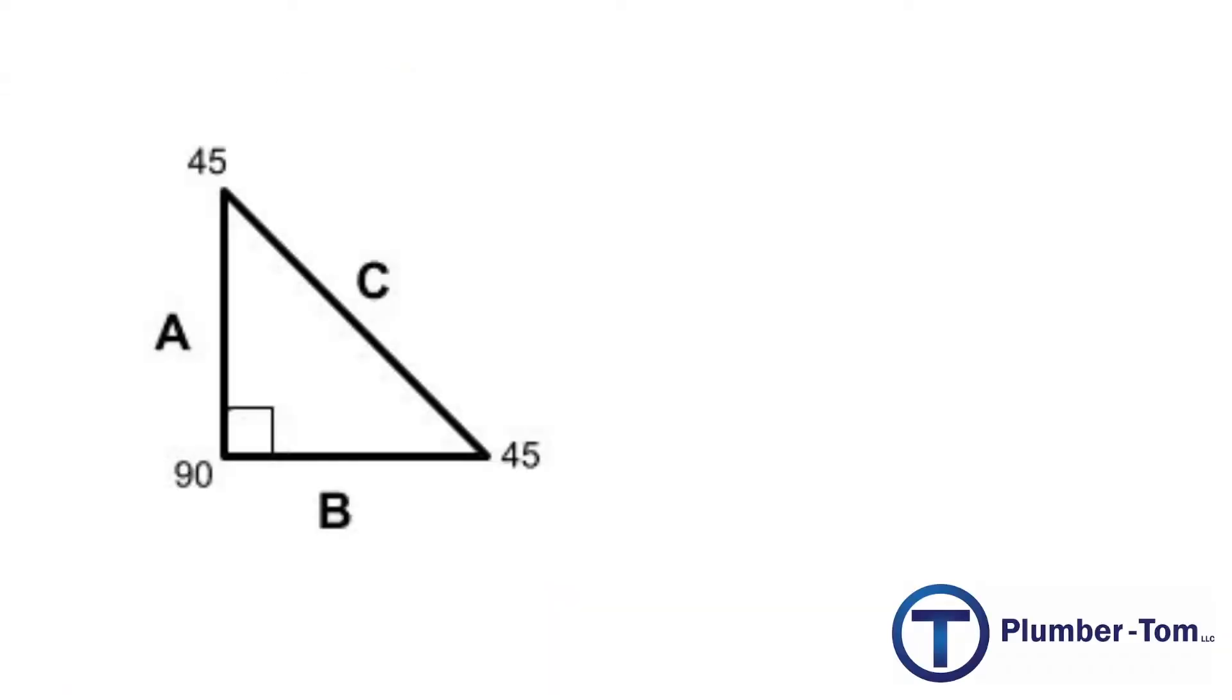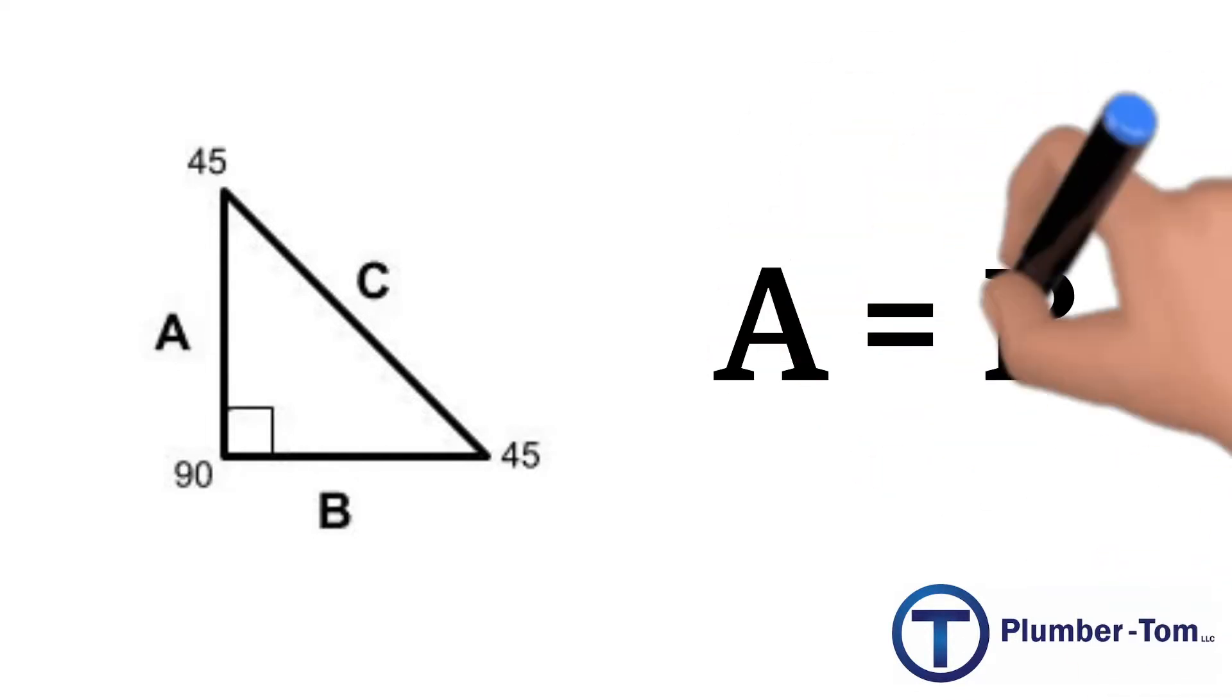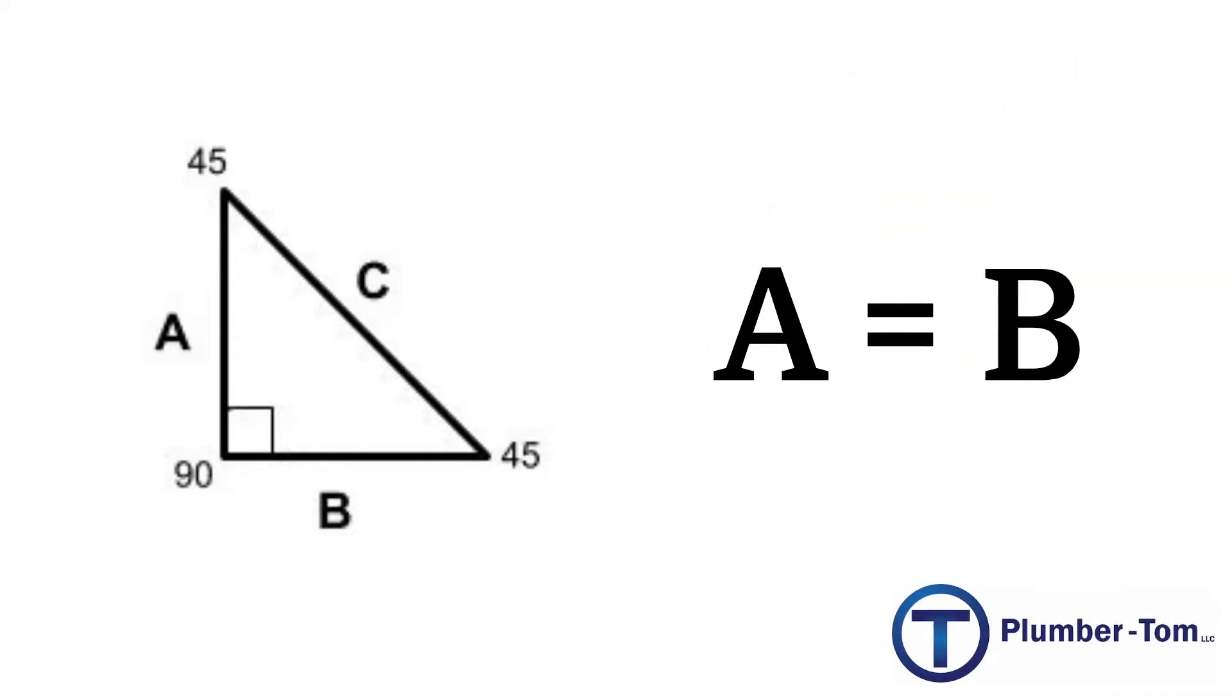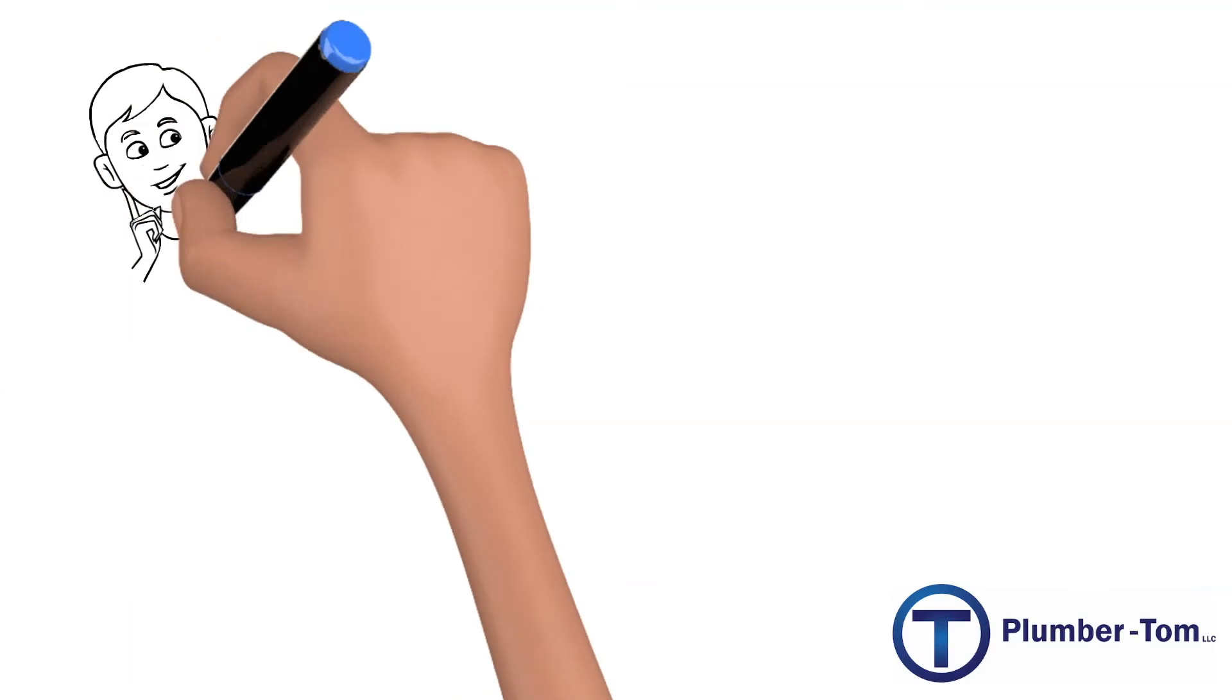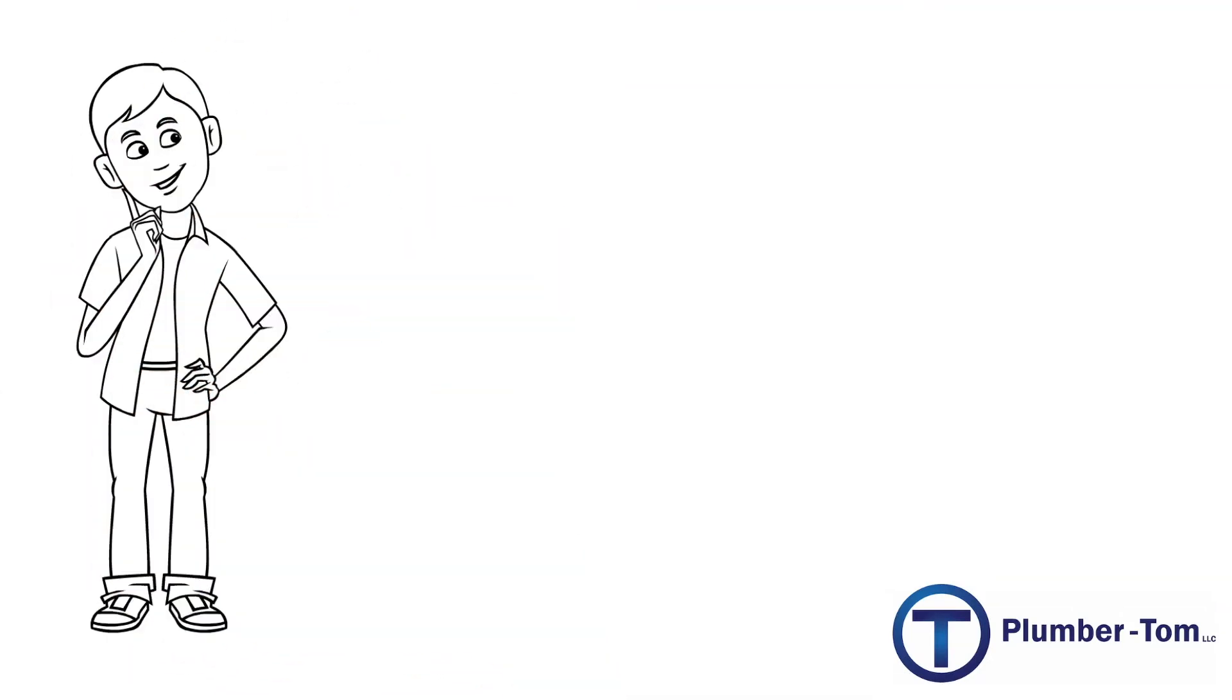Now back to our right triangle with 45 degree angles. It is important to note that this triangle has two shorter sides which are the same length. This is only true for a triangle with 45 degree angles. Now to find the origin of 1.414 we will need to use the Pythagorean theorem on a triangle with 45 degree angles.